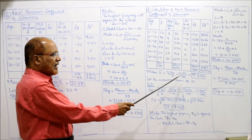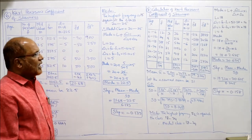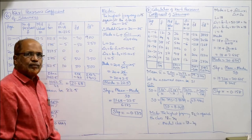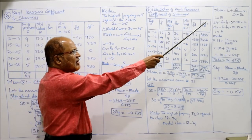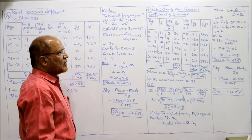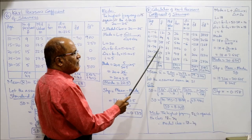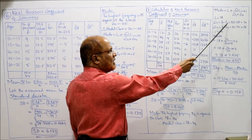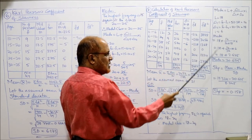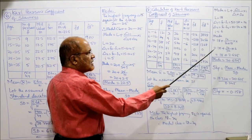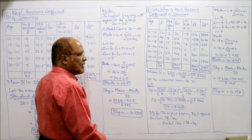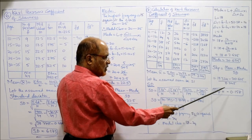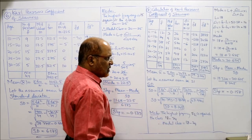The highest frequency is 52 against class interval 18 to 24, so modal class = 18 to 24. Mode = L + Δ1/(Δ1+Δ2) × i = 18 + 14/(14+18) × 6 = 20.625. SKP = (Mean − Mode)/SD = (19.324 − 20.625)/8.245 = −0.158. End of problem 7.